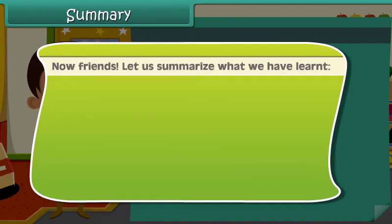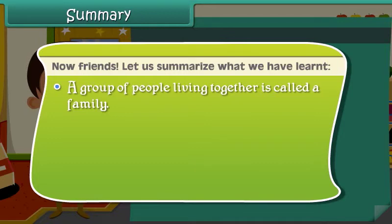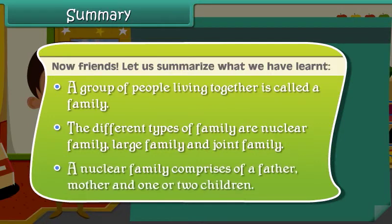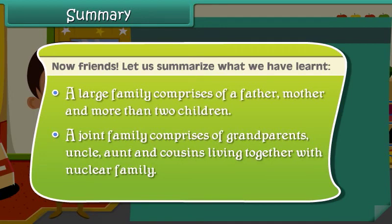Now friends, let us summarize what we have learned. A group of people living together is called a family. The different types of family are: nuclear family, large family and joint family. A nuclear family comprises of a father, mother and one or two children. A large family comprises of a father, mother and more than two children. A joint family comprises of grandparents, uncle, aunt and cousins living together with the nuclear family.